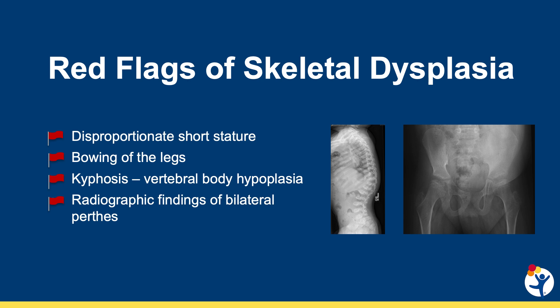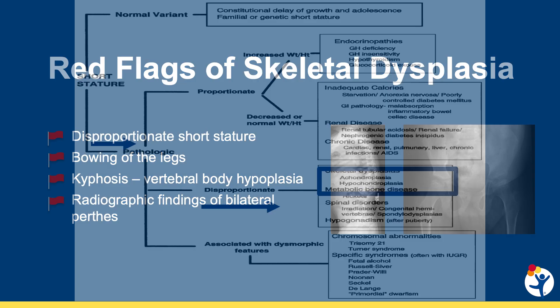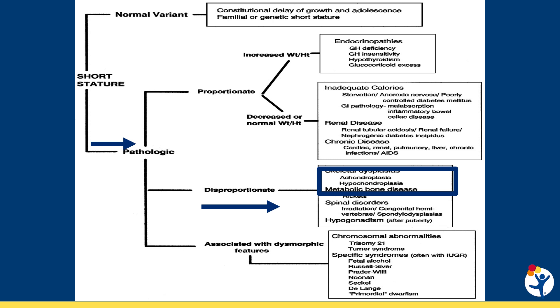There are several red flags to look for when considering a skeletal dysplasia. First and foremost is disproportionate short stature. Other clues may include bowing of the legs, kyphosis of the spine or a gibbous deformity resulting from vertebral body hypoplasia, or radiographic findings of bilateral Perthes disease or proximal femoral osteonecrosis.